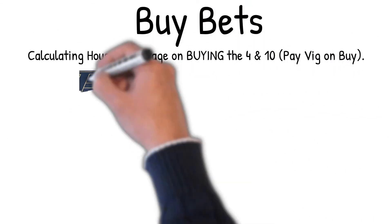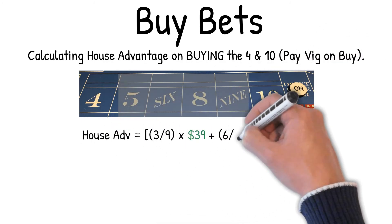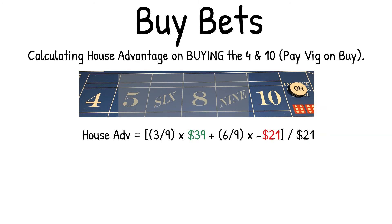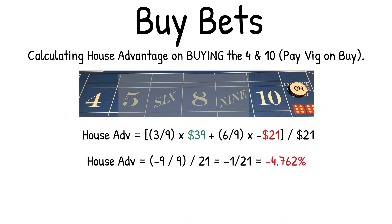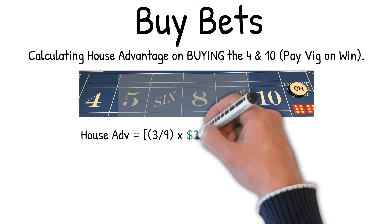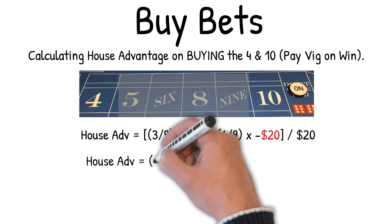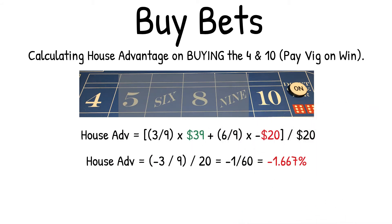Calculating the house advantage on buying the four and ten, paying the vig on the buy. House advantage equals: 3/9 × $39 + 6/9 × (−$20). This equals −3/9 over 20, which equals −1/60, which equals −1.667% house advantage.